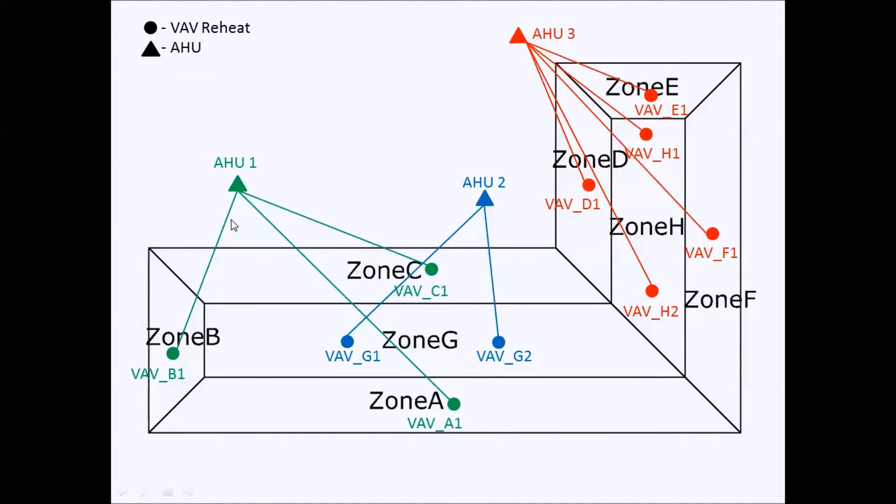There is an AHU which has one VAV in three different zones. Then there is an AHU which is providing air to one single zone, but there are two VAVs in that zone. And this AHU3 would be a mix of these two. So next we'll be making HVAC diagrams in the next video.